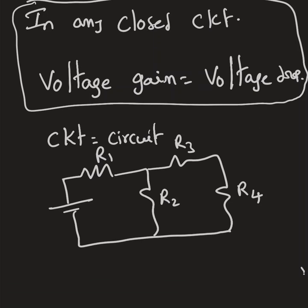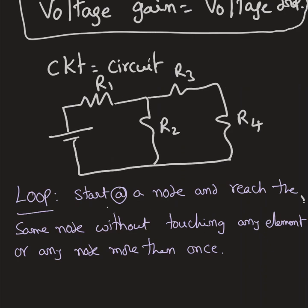According to Kirchhoff's Voltage Law, in this circuit — in any closed circuit — we have more than one loop. Loop is nothing but: start at a node and reach the same node without touching any element or any node more than once. That's called a Loop, also called a Mesh. There is a small difference: Mesh is the shortest distance, while a loop need not be the shortest distance. So every Mesh equals a loop, but every loop need not be a Mesh.